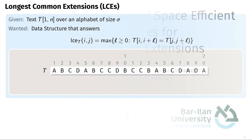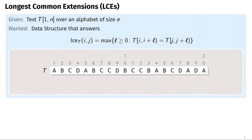First, let us take a look at the problem. Given a text T of length N over an alphabet of size Sigma, we want a data structure that answers longest common extension queries. A longest common extension query takes two text positions i and j and returns the maximum length for which the two substrings starting at those positions are equal. In our small example below, the LCE of positions 1 and 14 is 5, as the first five characters are the same and only the sixth characters differ.